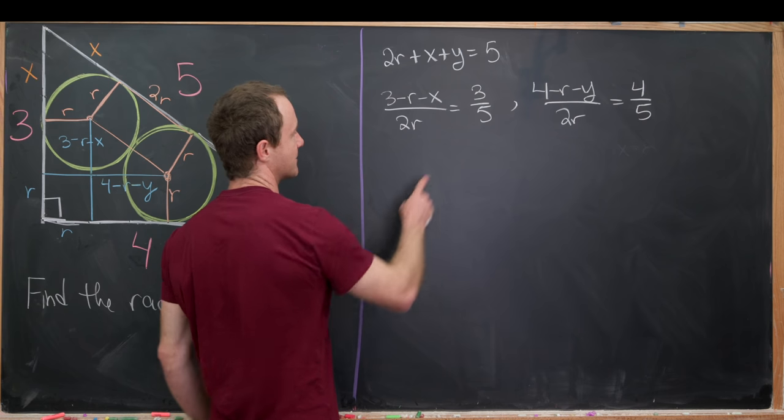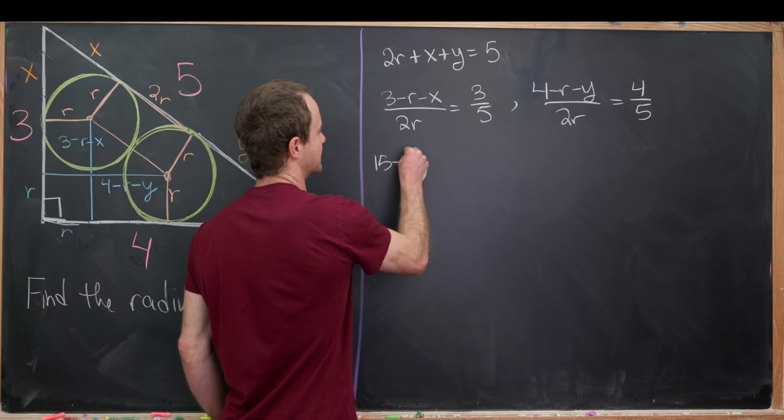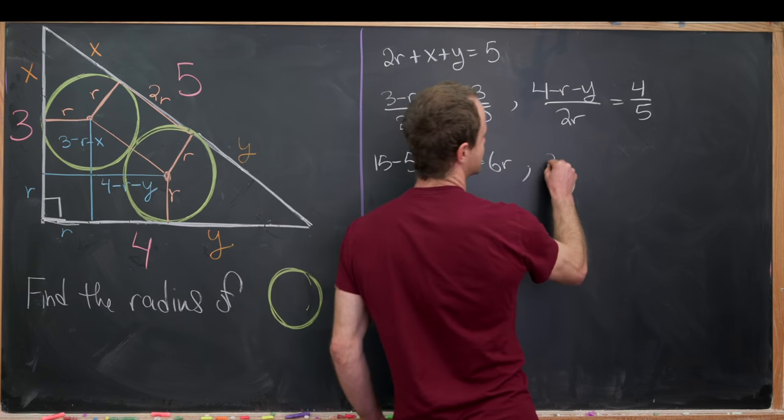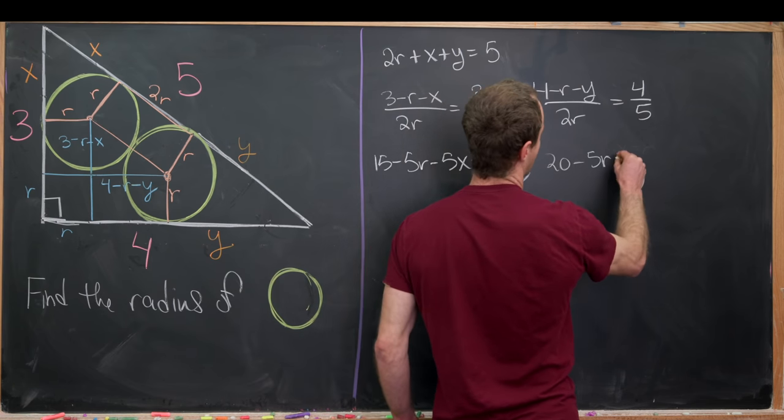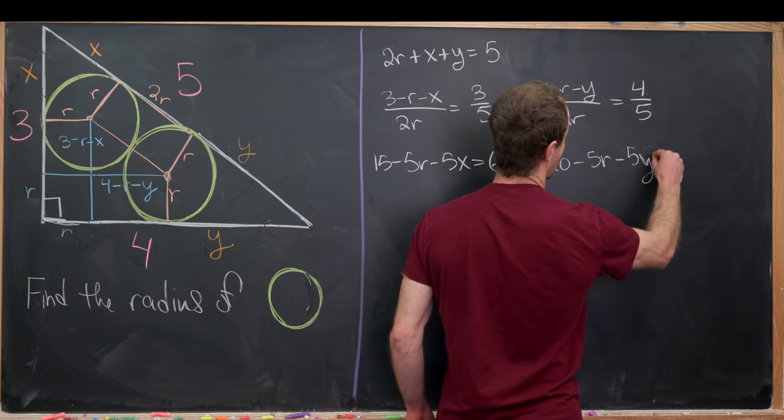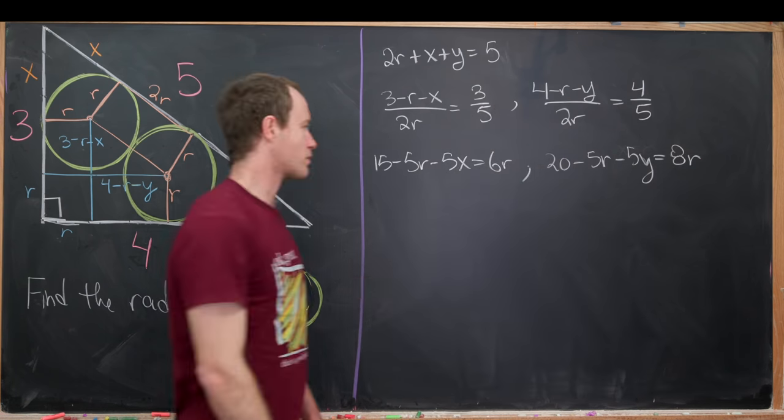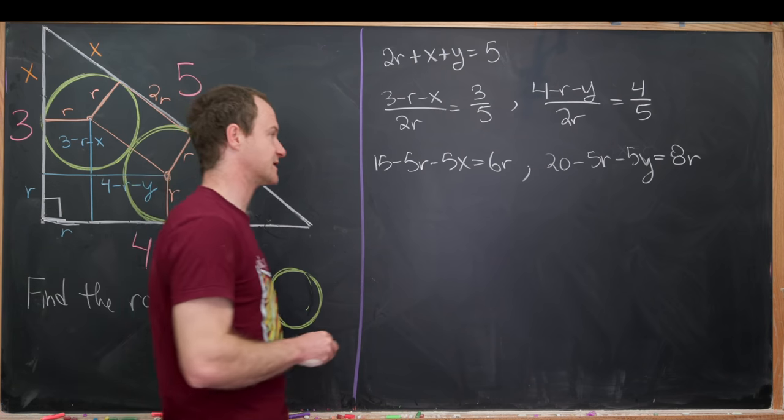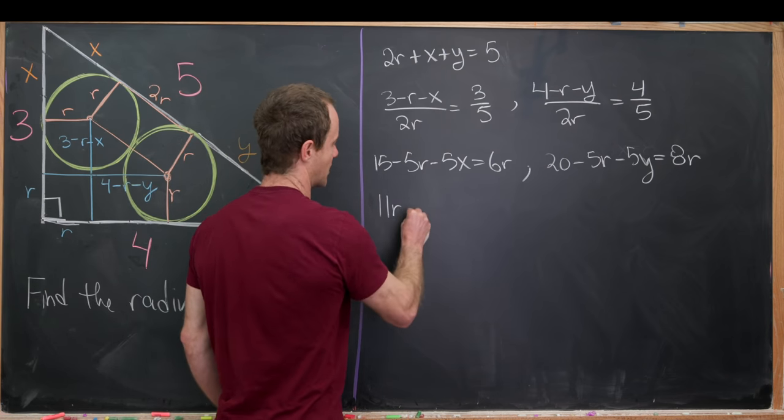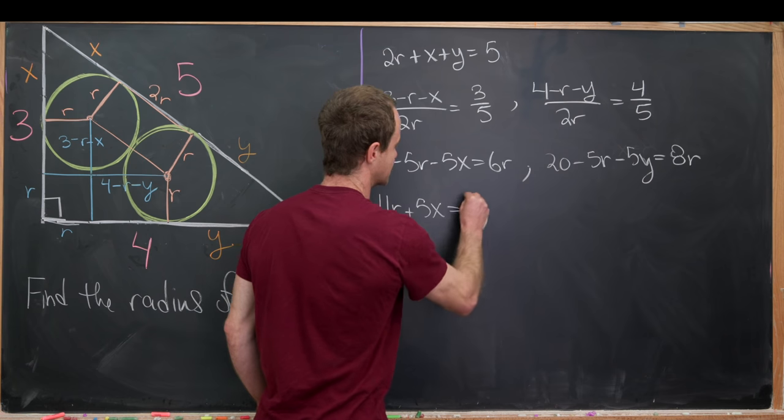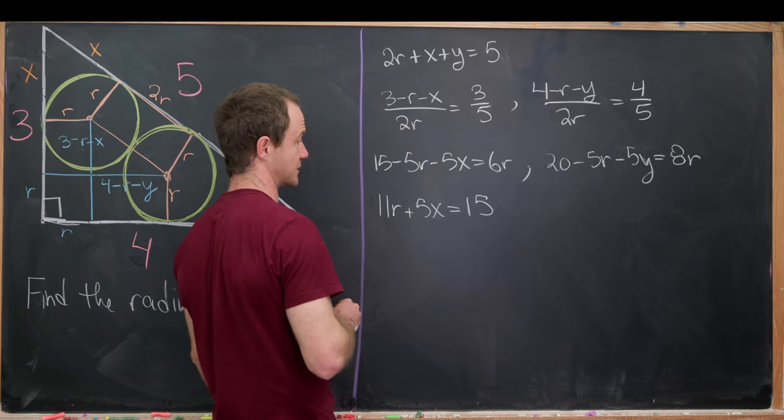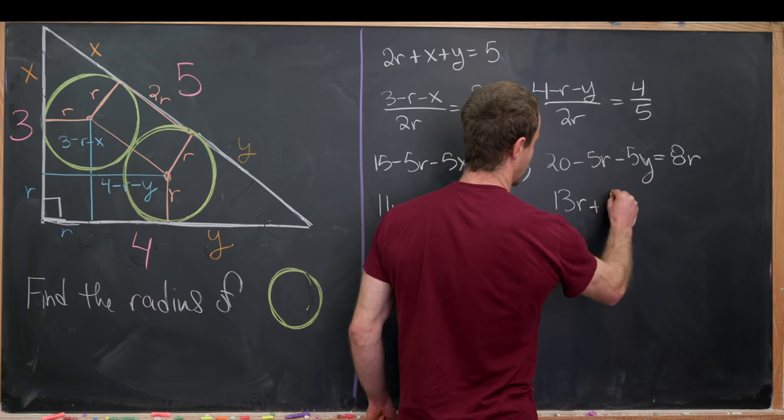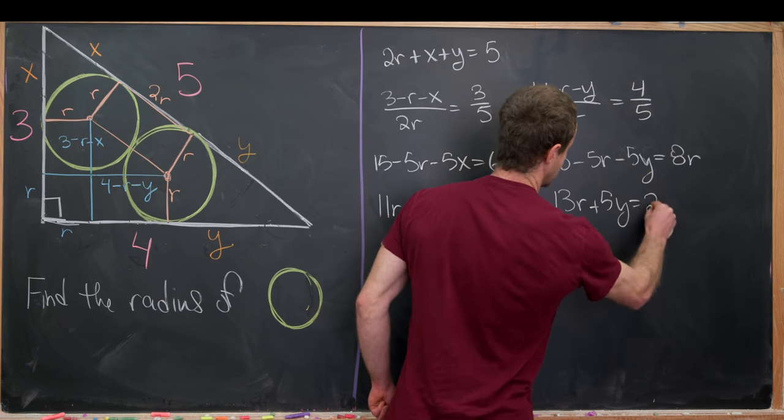Now we can cross multiply here. This is going to give us 15 minus 5r minus 5x equals 6r. And this one will give us 20 minus 5r minus 5y equals 8r. Now we can move all the variables to one side and all the numbers to the other side. This one will give us something like 11r plus 5x equals 15 after we move things around. Whereas this one over here gives us 13r plus 5y equals 20.